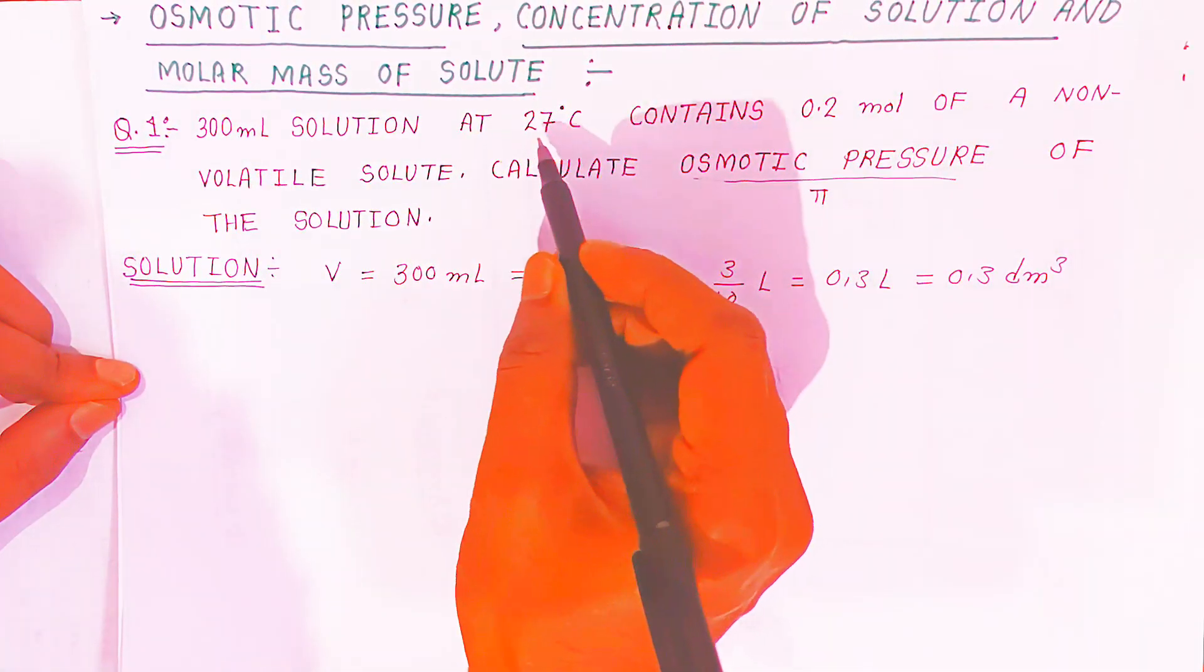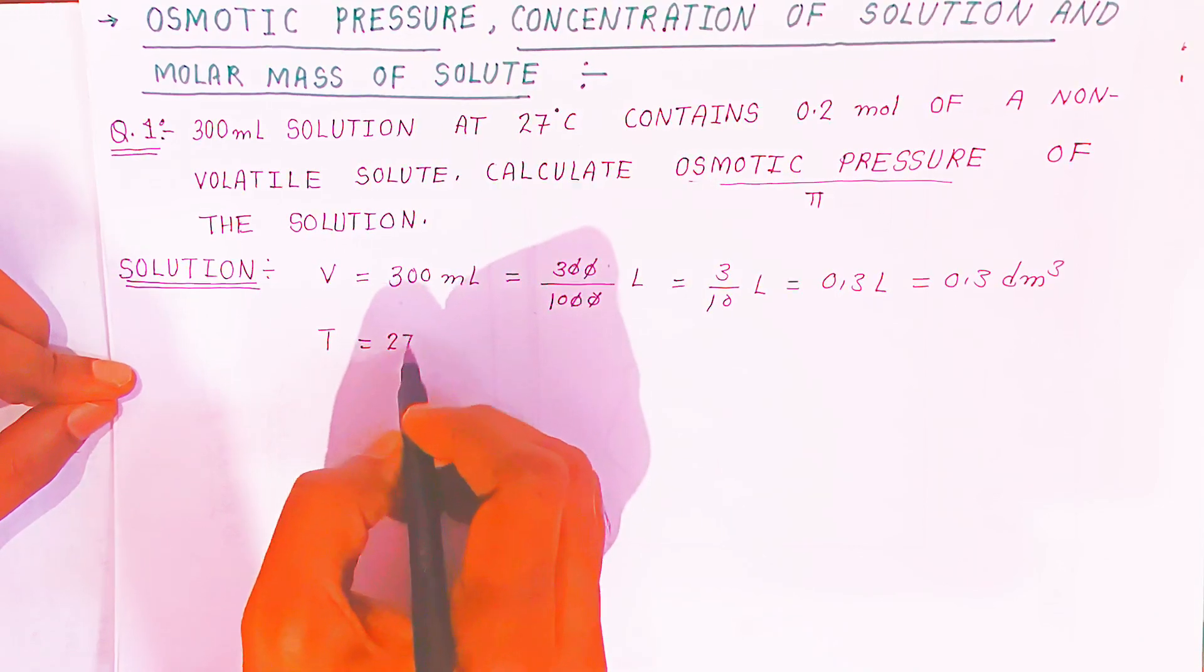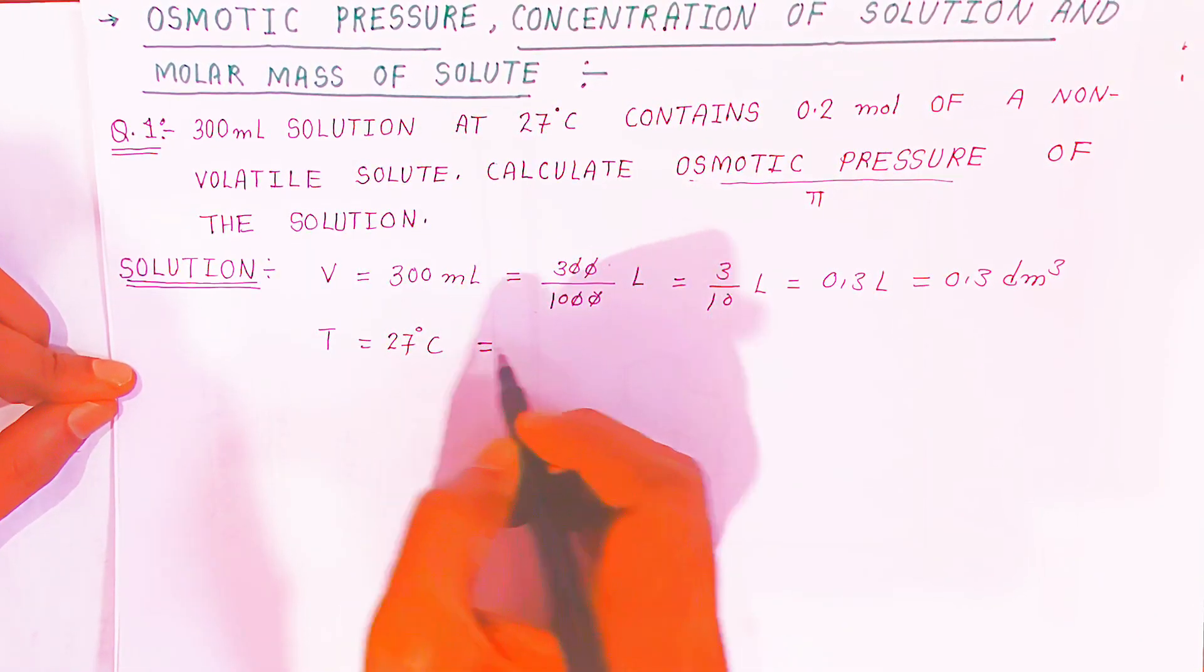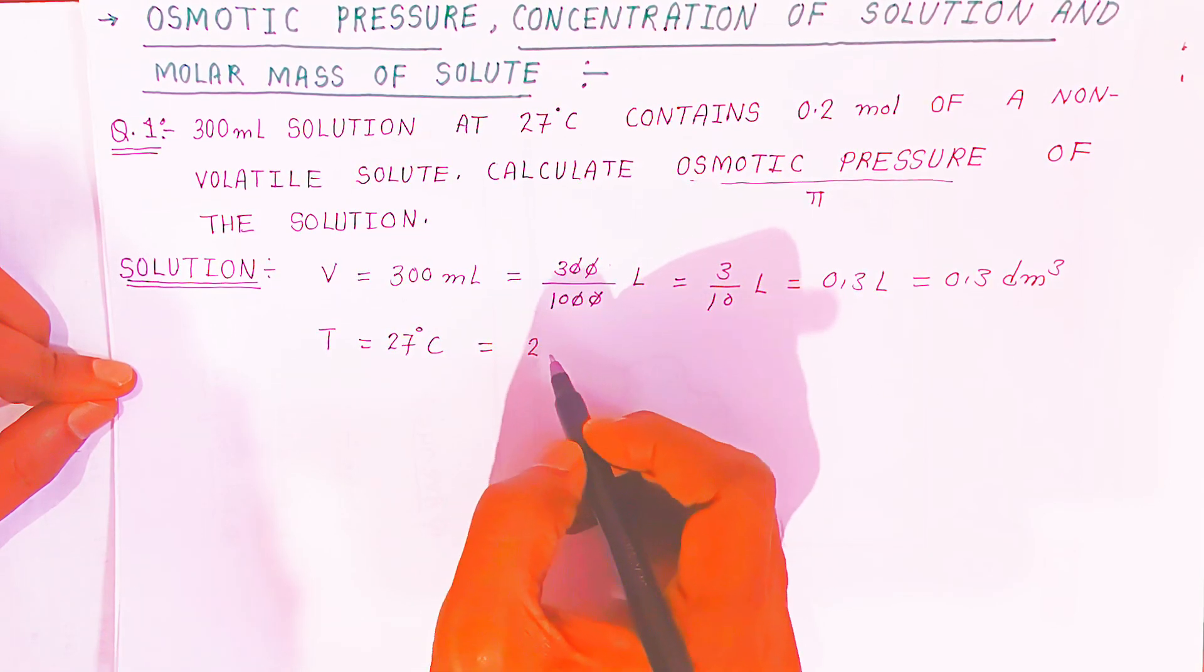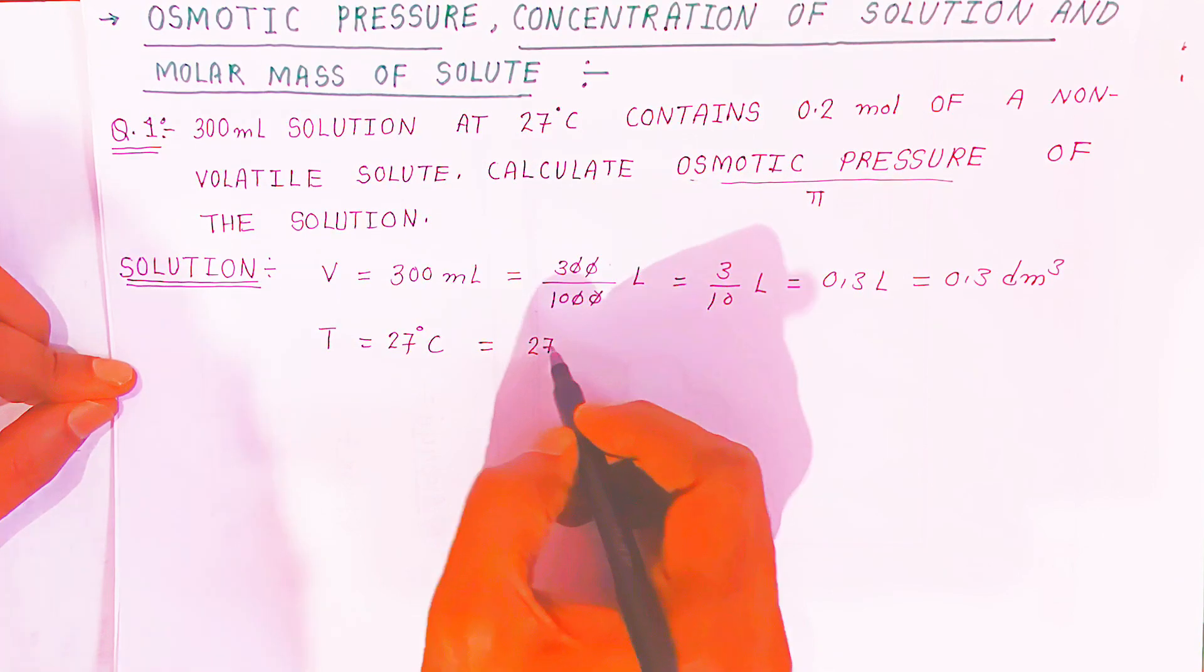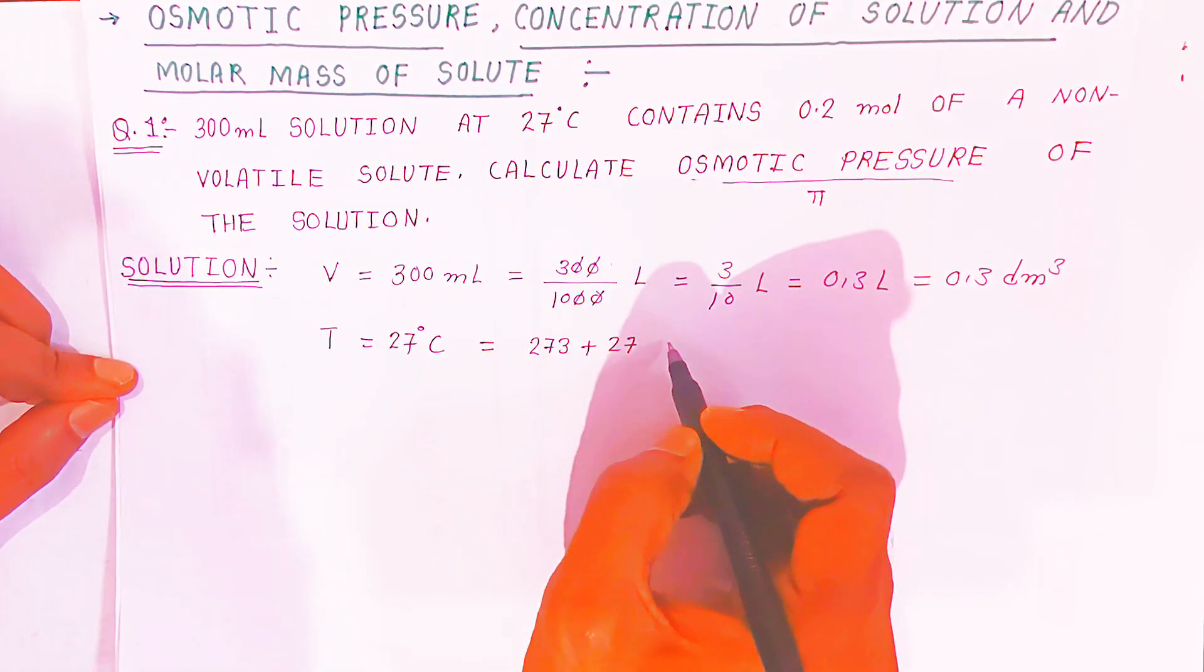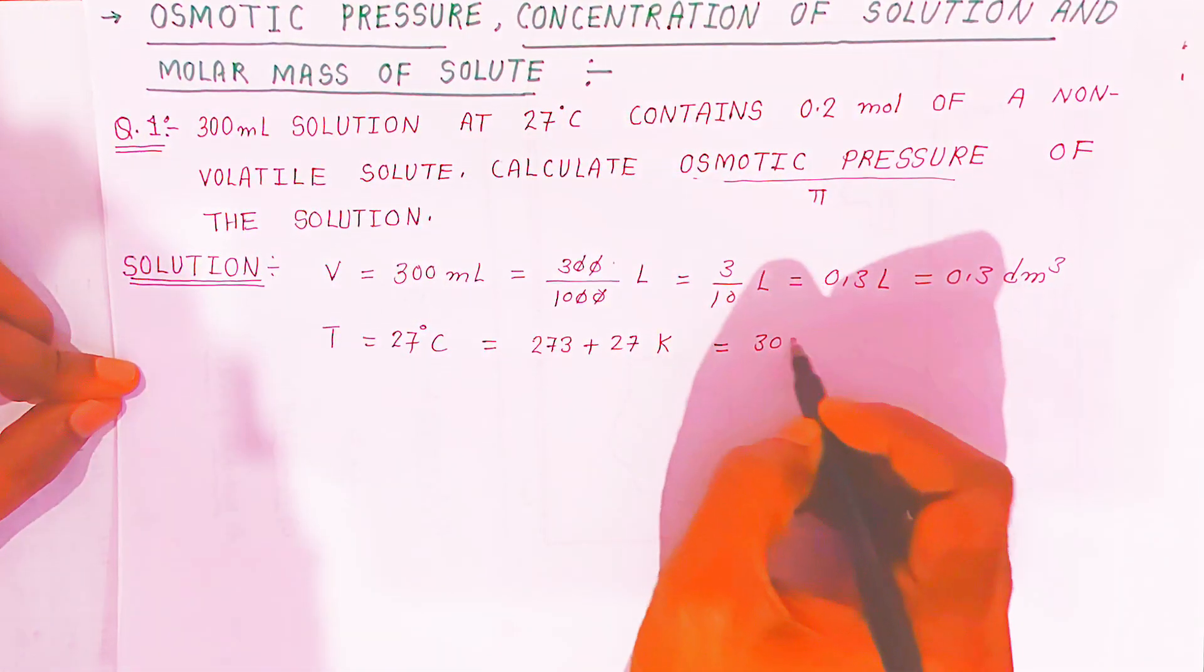Now temperature is given in degrees Celsius, 27°C. We have to convert into Kelvin. You know 1°C equals 273 K. So 273 you have to add with 27, it will convert into Kelvin. So you will get 300 K. Once you have converted all the units...